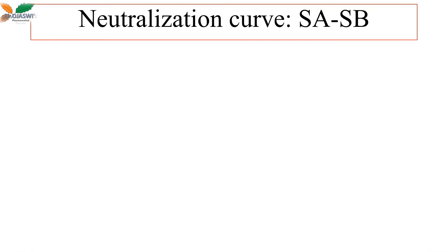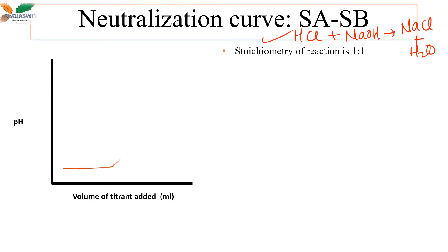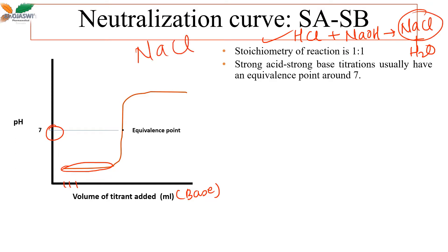Neutralization curve for strong acid and strong base: strong acid like HCl and strong base like NaOH, when titrated, give salt NaCl and water. On the graph, x-axis is volume of titrant and y-axis is pH; the stoichiometry is 1:1. With each addition, there is a very slow increase in pH with each addition of the alkaline solution from the burette. Strong acid–strong base titrations usually have an equivalence point around pH 7.